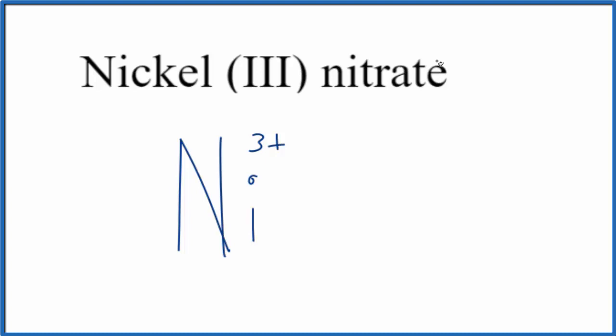Nitrate, you're not going to find that on the periodic table. That ate suffix means it's a polyatomic ion. I recommend that you memorize the nitrate ion, it's NO3, and the whole thing has a one minus ionic charge. This comes up a lot in chemistry.